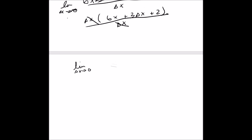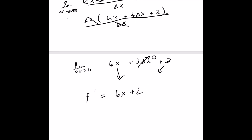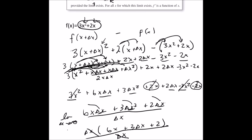We're left with 6x plus 3·change of x plus 2, and we're taking the limit as change of x approaches 0. So the change of x term goes to 0, because 3 times 0 is 0. After all that work, we have our derivative: 6x plus 2.